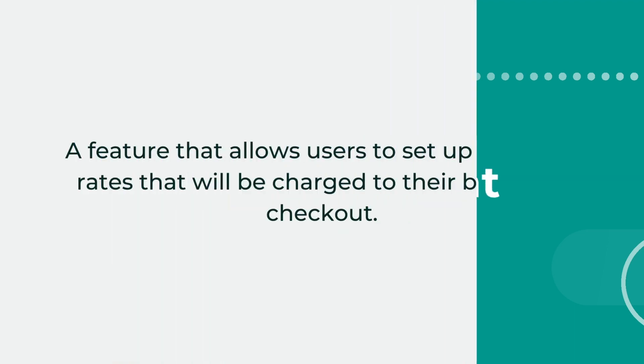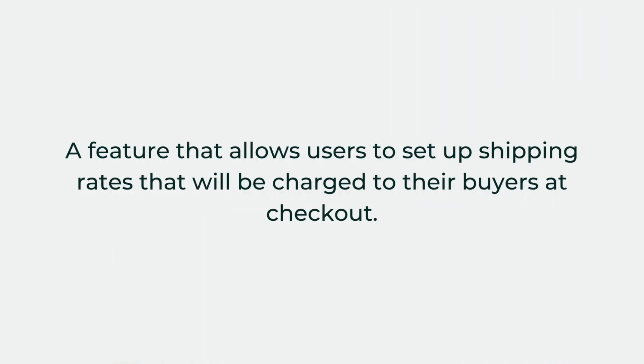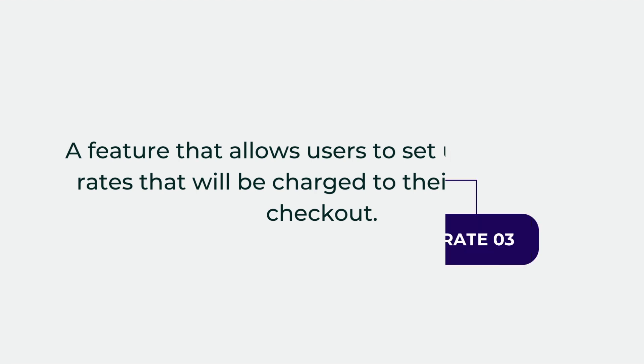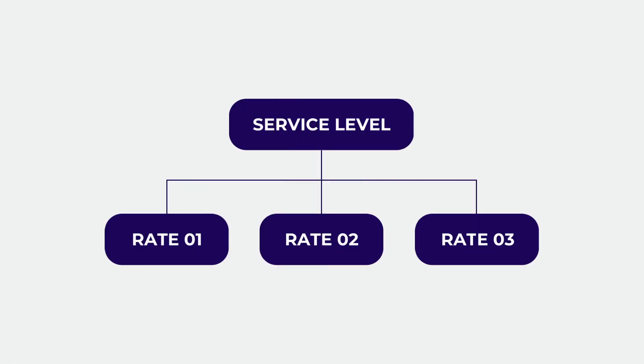Rates at checkout is a feature that allows users to set up shipping rates that will be charged to their buyers at checkout. These rates will be configured based on certain criteria and can be set up for different service levels with other specific requirements. Users can create multiple rates within a service level. Each rate has its own criteria, and if multiple rates are matched on a single request, the cheapest rate is returned.